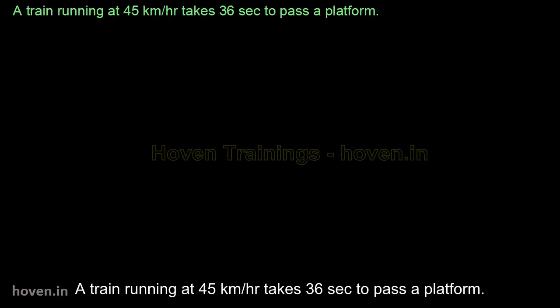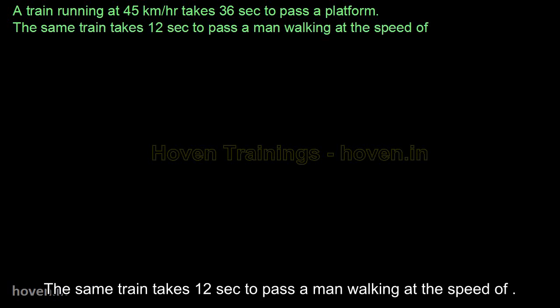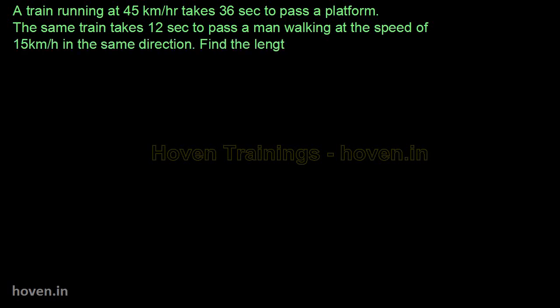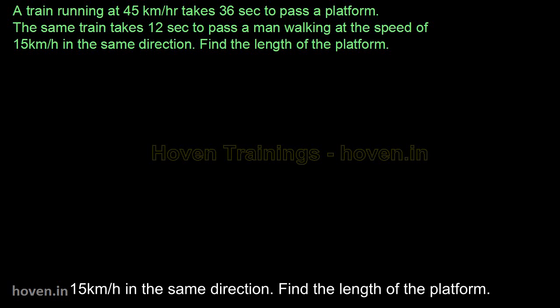A train running at 45 km per hour takes 36 seconds to pass a platform. The same train takes 12 seconds to pass a man walking at the speed of 15 km per hour in the same direction. Find the length of the platform.